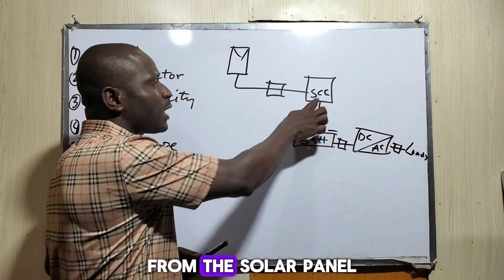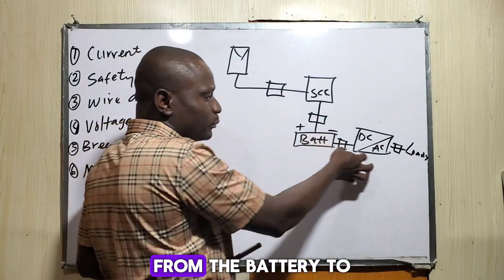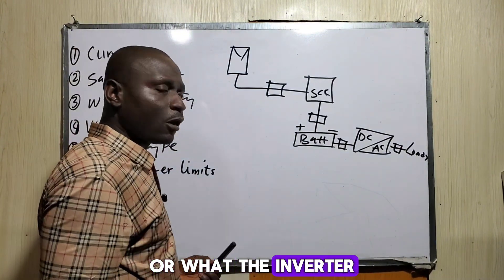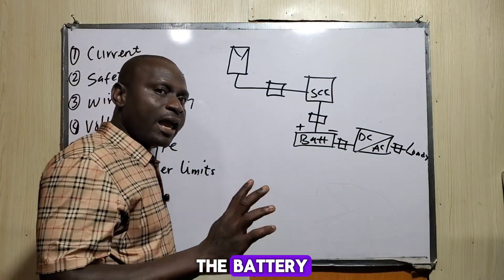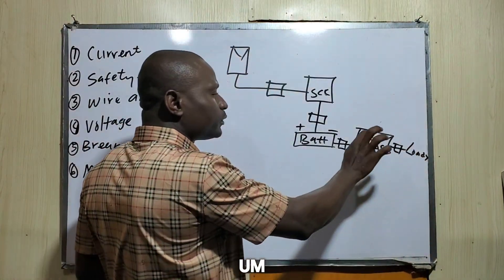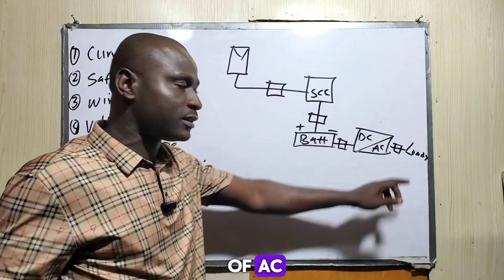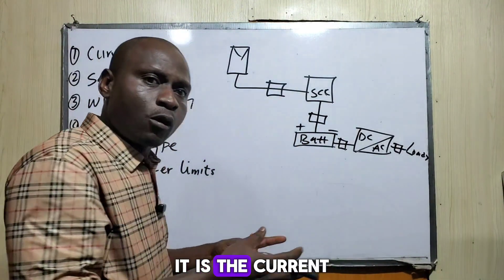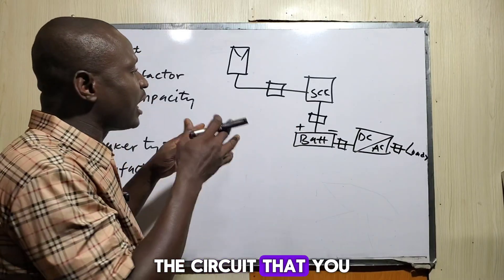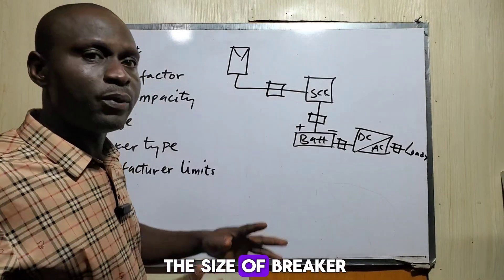From the charge controller to the battery, from the battery to the inverter — it is the normal operating current flowing through each part of the circuit that you use in sizing or choosing the size of breaker.